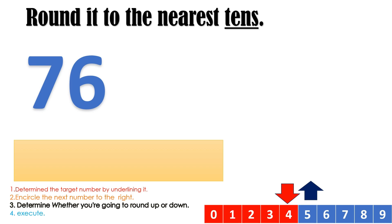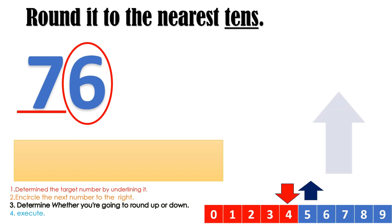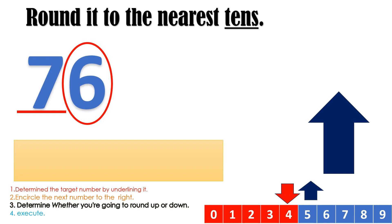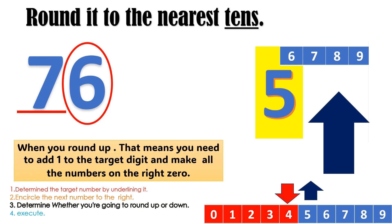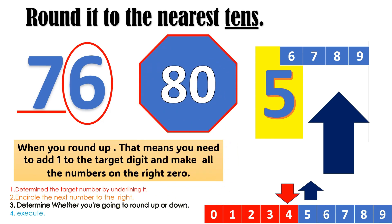Round it to the nearest tenths. What is the target number? Correct — number 7. Then, what is the rounding number? Very good, it's number 6. Based on that rounding number, are we going to round up or round down? Correct — we are going to round up since number 6 is higher than number 5. When we round up, remember that you need to add 1 to the target digit and make all the numbers on its right 0. So what is the final answer? 18.